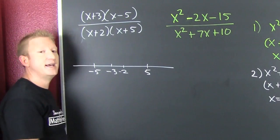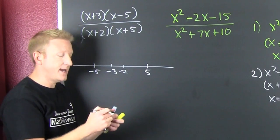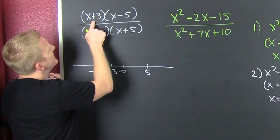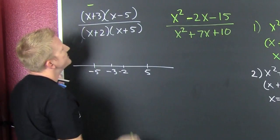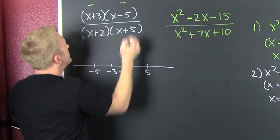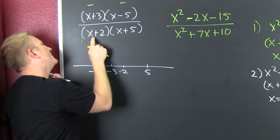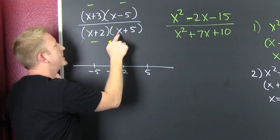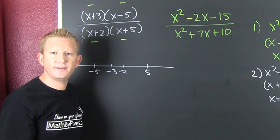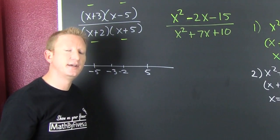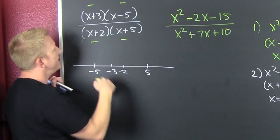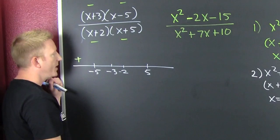I look at a value to the left of minus 5 — let's take minus 10. I'm not looking for the actual value of the function, I'm looking for its sign. Minus 10 makes each factor negative: that's minus, minus, minus, minus. Then you count the number of minus signs — if it's even, your product and quotient are gonna be positive. So I see an even number of negative signs, so it's gonna be plus over there.